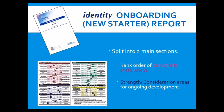So hopefully to boost productivity, performance and engagement. The Identity onboarding report is designed to be split into two main sections. We rank order the personality preferences, and then take it into a second section which looks in a little bit more detail at the strengths and considerations around those personality preferences. It's looking mainly at the development of that individual, starting as soon as they walk through the door into that new role.